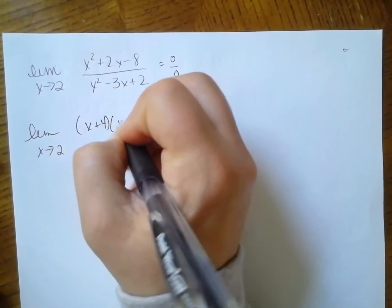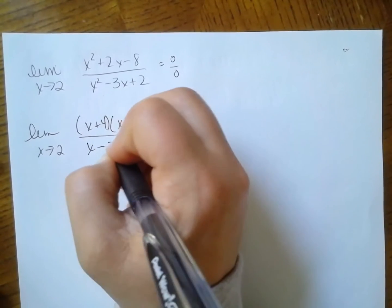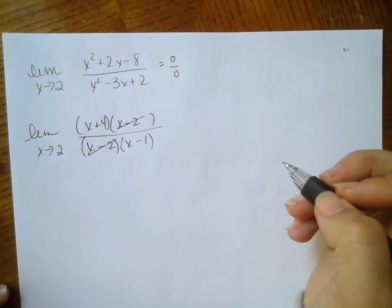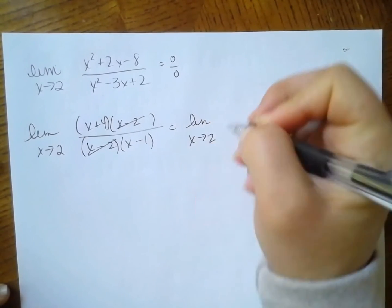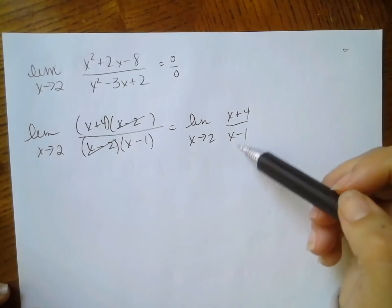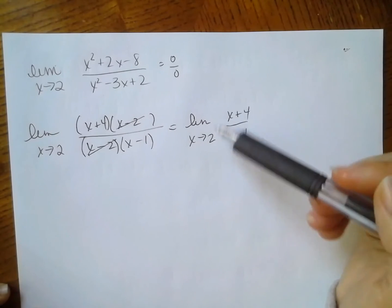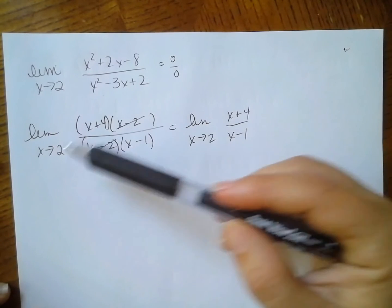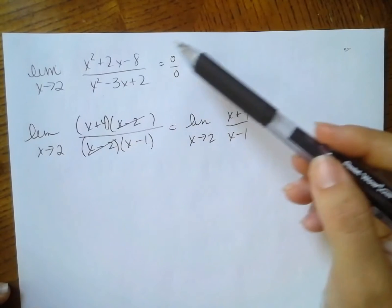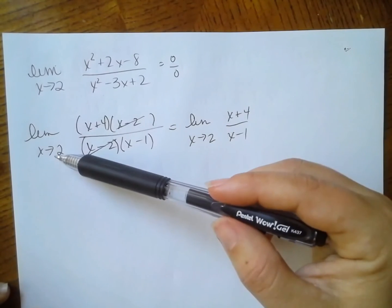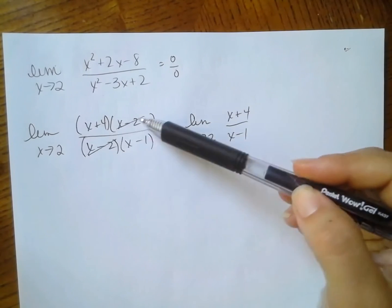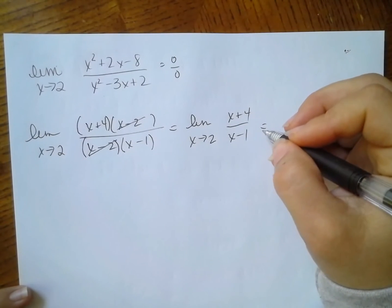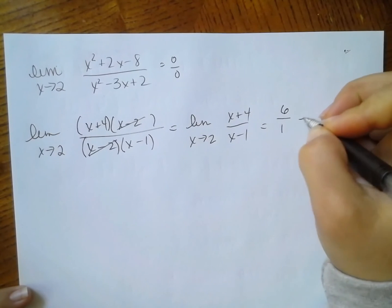When I have a rational function like this, factoring is my best friend. So I'm going to factor the top and the bottom — I'm writing the limit as x approaches 2 each time. This factors to (x plus 4)(x minus 2) on top, all over (x minus 2)(x minus 1) on the bottom. Now I can cancel the common (x minus 2) factors. The new limit as x approaches 2 of (x plus 4) over (x minus 1) is the same as the original because the two functions are identical except at x equals 2. I plug in 2 and get 6 over 1, which is 6 — that's my limit.